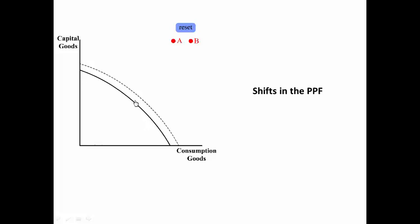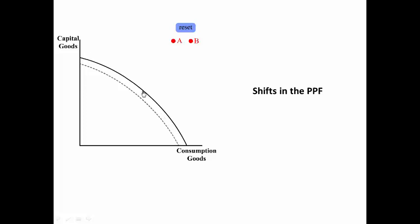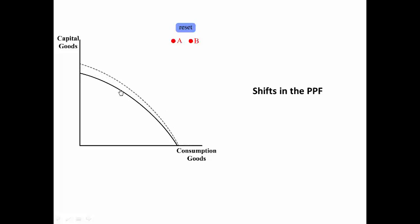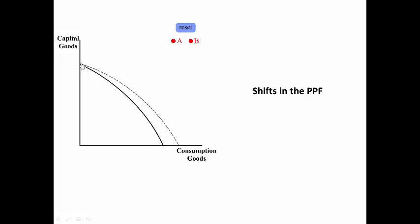Another shift would be if there's an increase in just capital good production but really no change in consumption goods production. There could be an outward shift in consumption good production with no change in capital good production. There could be an inward shift of capital good production with no change in consumption good production, or there could be an inward shift of consumption good production and no change in capital good production.